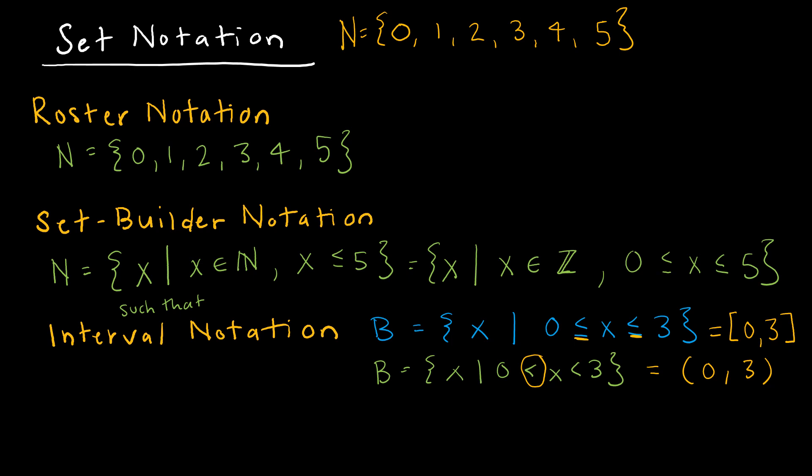And of course you could get crazy and say all of the X's such that 0 is less than or equal to X is less than 3. And of course that would be on the left side a closed bracket because 0 is included, but on the right side an open bracket because 3 is not included. So hopefully these all are familiar to you, but these are the different ways you might see a set notated.